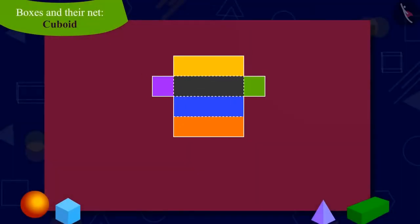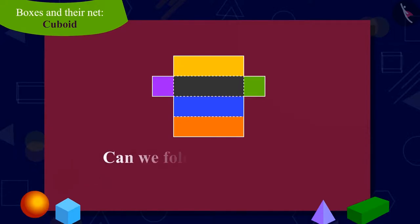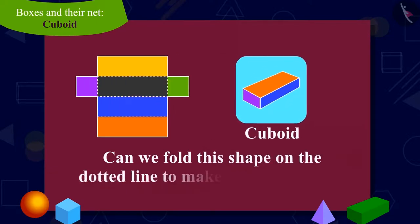Children, look at the shape of this cutout and answer. Is this shape also a net of a cuboid? In other words, can we make a box shaped like a cuboid by folding this cutout on the dotted line? You can find the answer to this question by pausing the video.